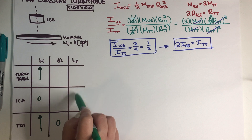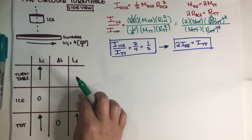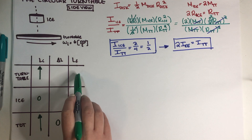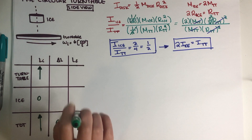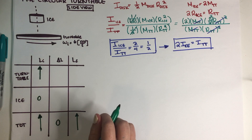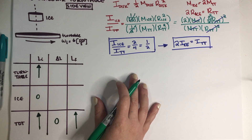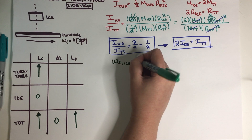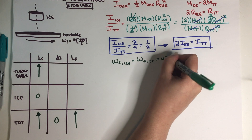In the final state, both the ice and turntable are spinning, and their combined angular momenta must add up to the initial total. When two objects rotate together, they have the exact same angular velocity — we'll call it omega_final. This is what we need to find.